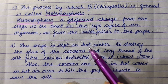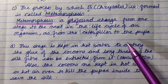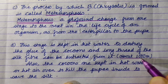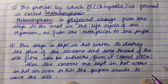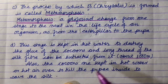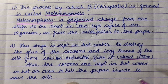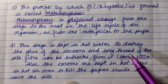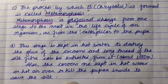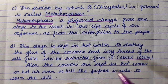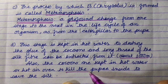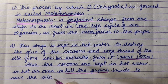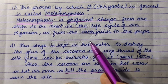The cocoons are kept in hot water or a hot air oven to kill the pupae inside and save the silk. We will put the cocoon in hot water or hot air oven to extract the silk.